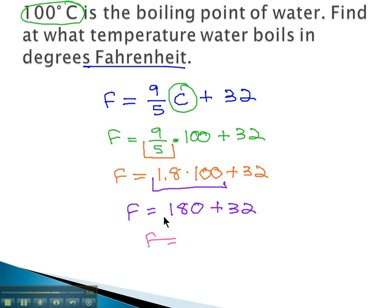And finally, order of operations does the addition last. 180 plus 32 is 212 degrees Fahrenheit. That is going to be the equivalent boiling point of water in degrees Fahrenheit.